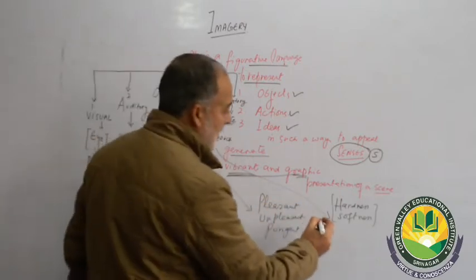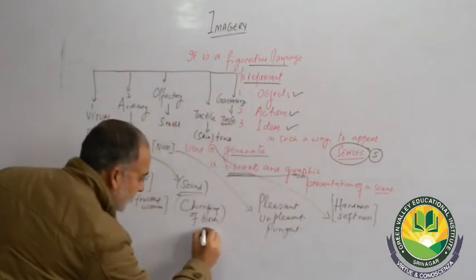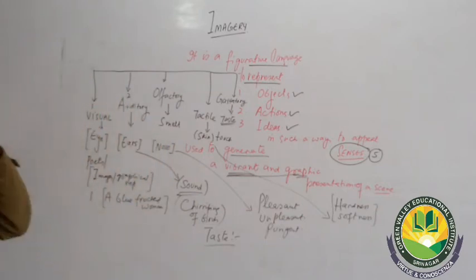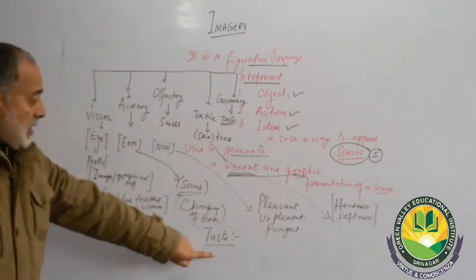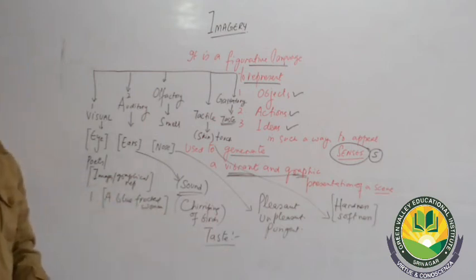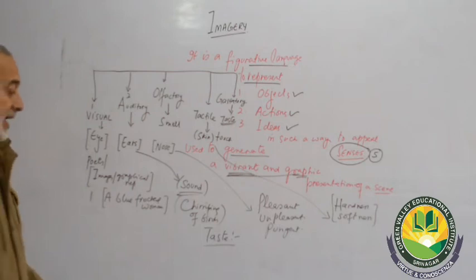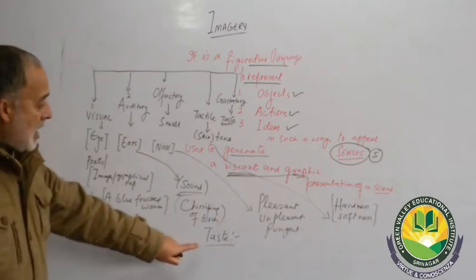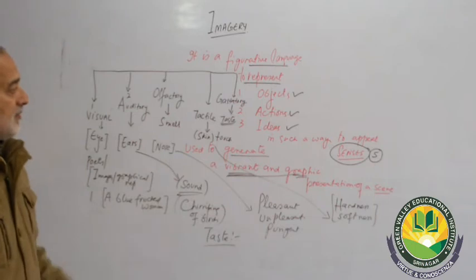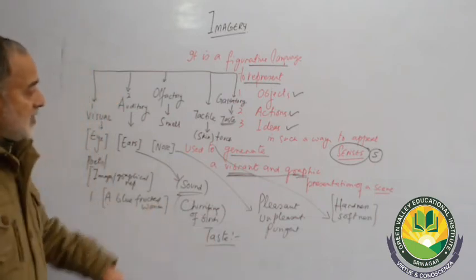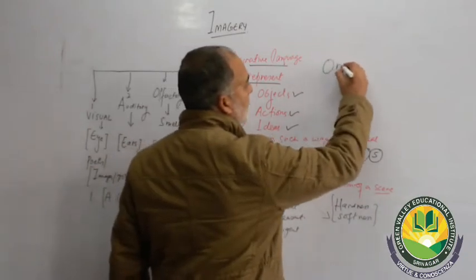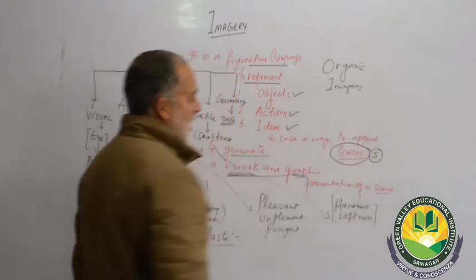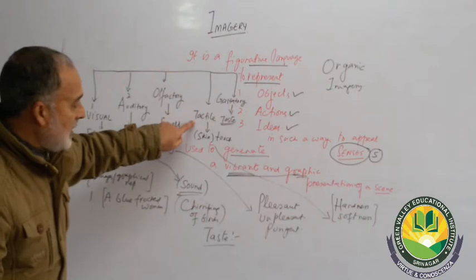The last of the five main types is gustatory imagery — pertaining to taste. Any image can be created to evoke a vibrant sense of taste, such as salty, sugar, or sweet. Apart from these five types, there are two more important categories: organic imagery and kinesthetic imagery.